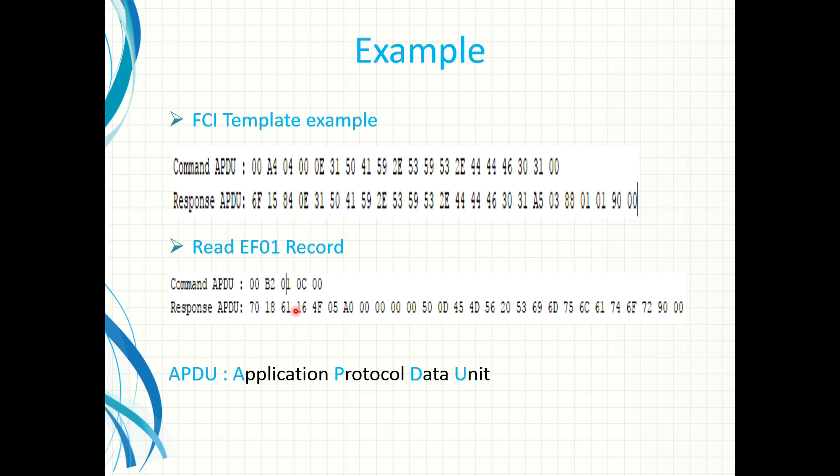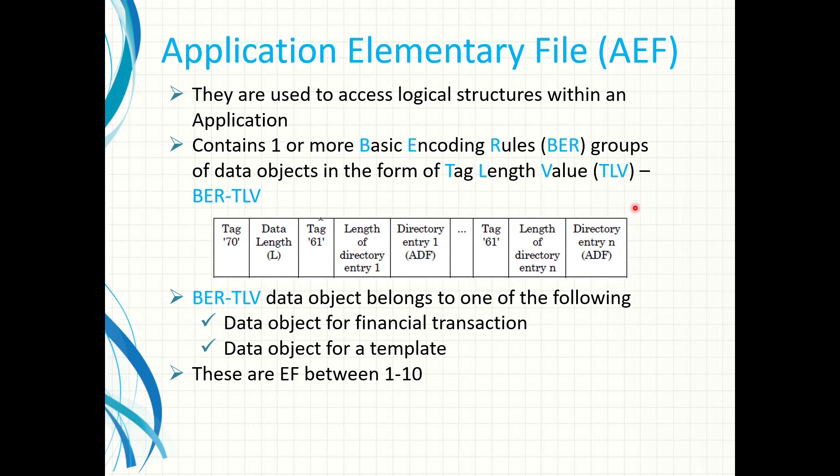Jumping back to the elementary file content, I would like to show you an example of a response containing the records from an elementary file. As we saw in the previous slide it has the tag 70. This is the content of the elementary file, always starts with the tag 70, and it has a length and then a series of tags with 61 and their length and values.